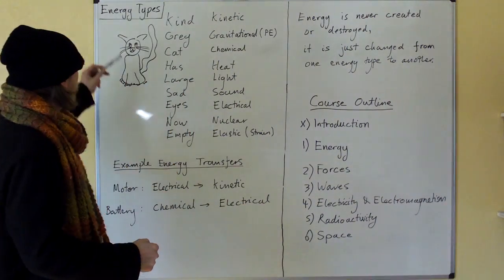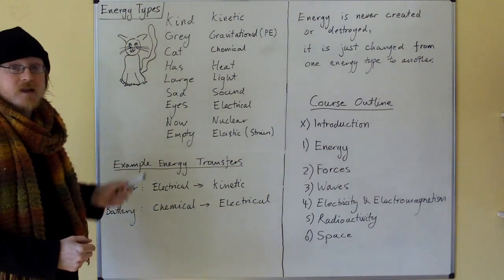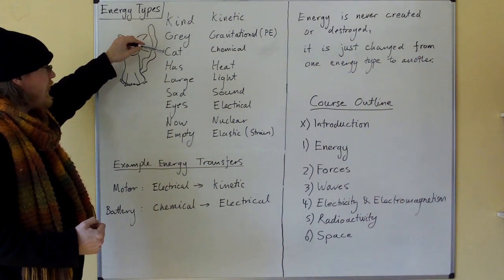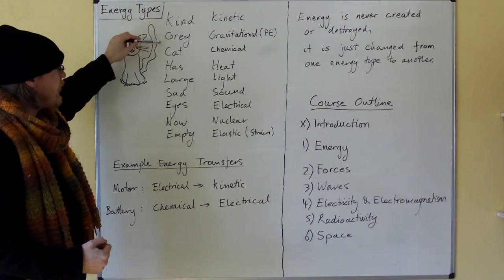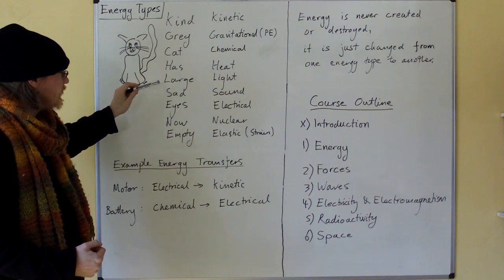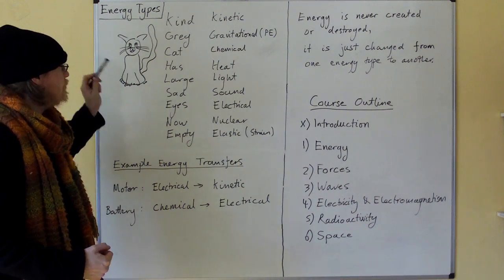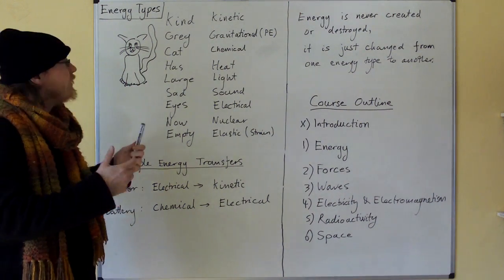Let's get straight on with it. We're starting with energy types. We remember the energy types with the kind grey cat. The kind grey cat has large, sad eyes, now empty. This teaches us the nine types of energy.